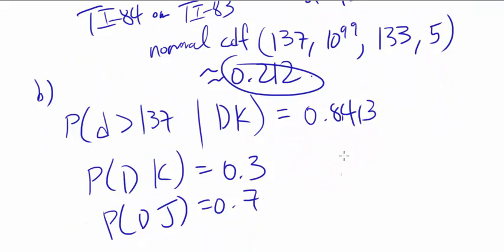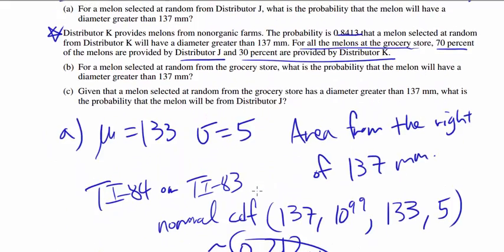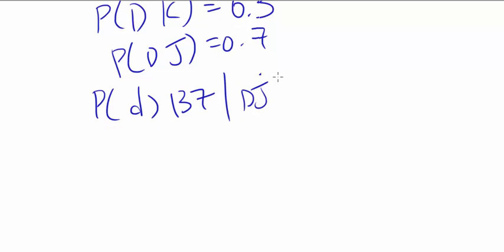Another thing to realize from part A, we have found the probability that the diameter is more than 137 for a melon from distributor J. So we know this probability too as 0.212.